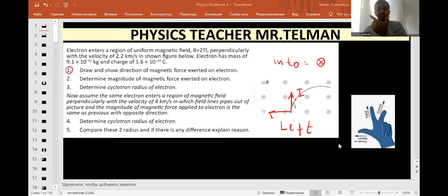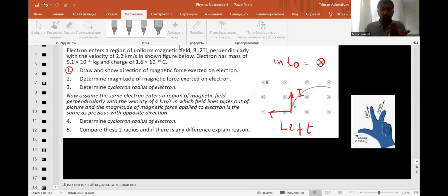So thumb, magnetic force, magnetic field and the current. And according to the picture, to this picture, let me show it. Like this picture, the direction will be to the left.